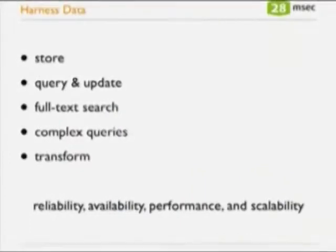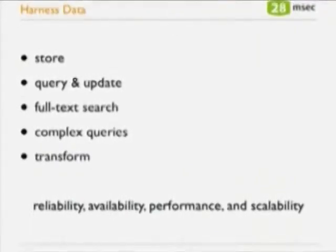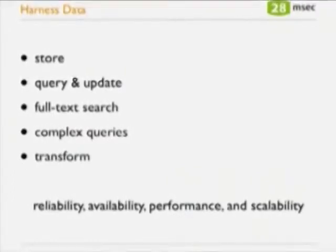Now that we know what we mean by flexible data, we need to understand what we mean by harnessing this data. First of all, we want to store this data — lots of data. We also want to query and update it. We want to do full-text search, like the type-ahead functionality at the top of the page. We want to do complex queries, like data cleaning or transformations. All this needs to happen in a reliable fashion — 24/7 availability, highly performant and scalable. After a sports event more people will visit, so you need a scalable infrastructure.